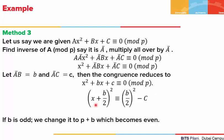We complete the square: (x + b̄/2)² ≡ (b̄/2)² - c̄ mod p. If b̄ is odd, it won't be divisible by 2, so we replace b̄ with p + b̄, which is even since p is an odd prime and b̄ is odd. This makes the division by 2 valid.